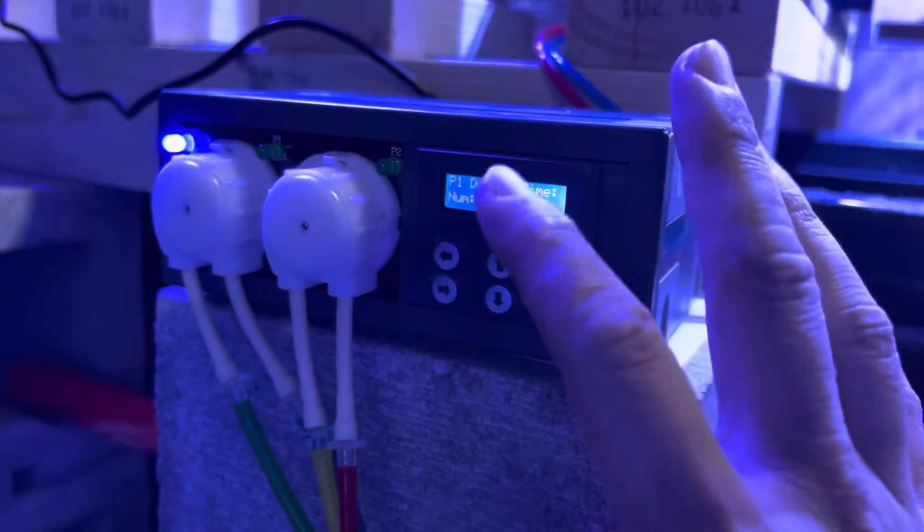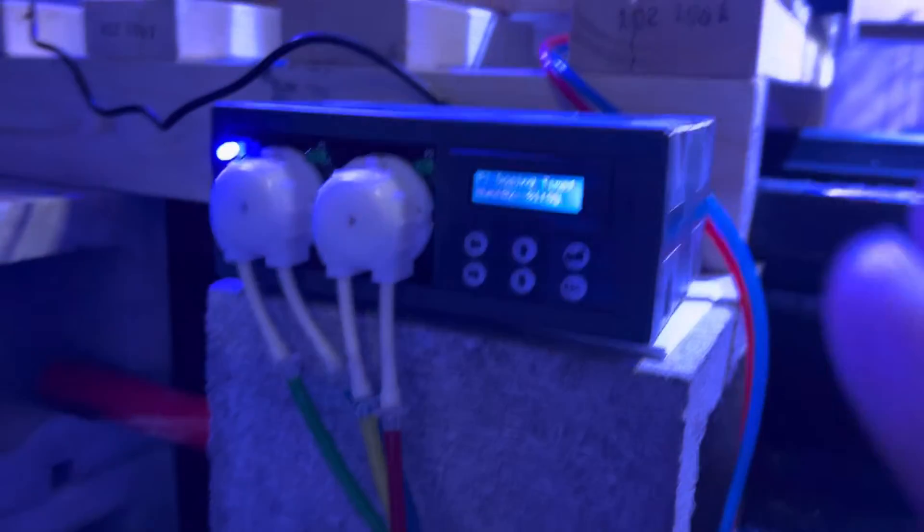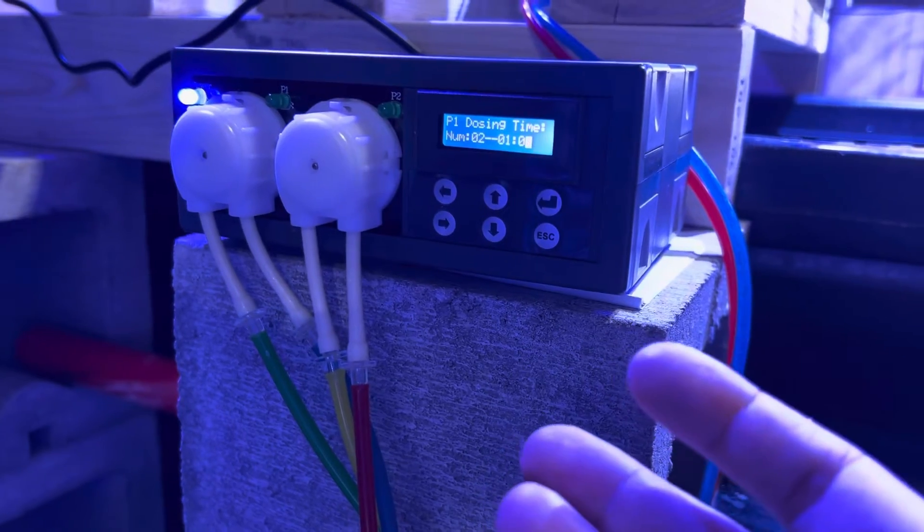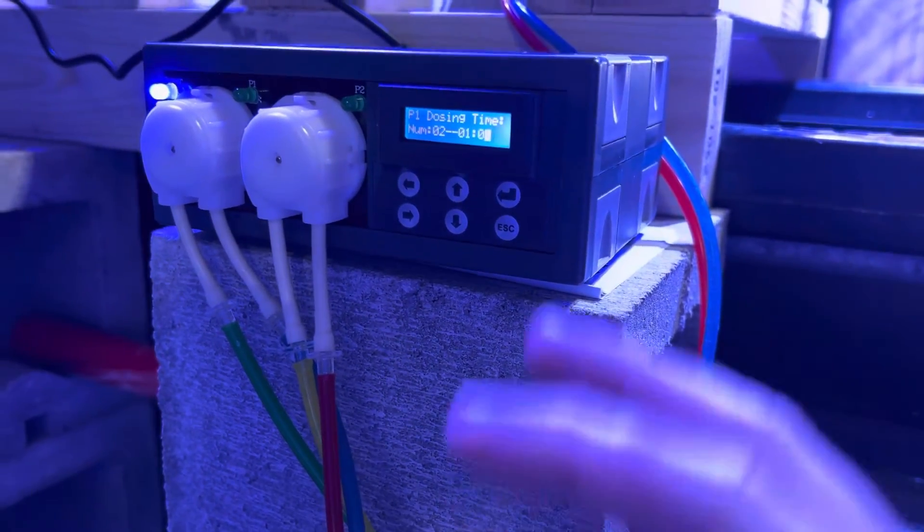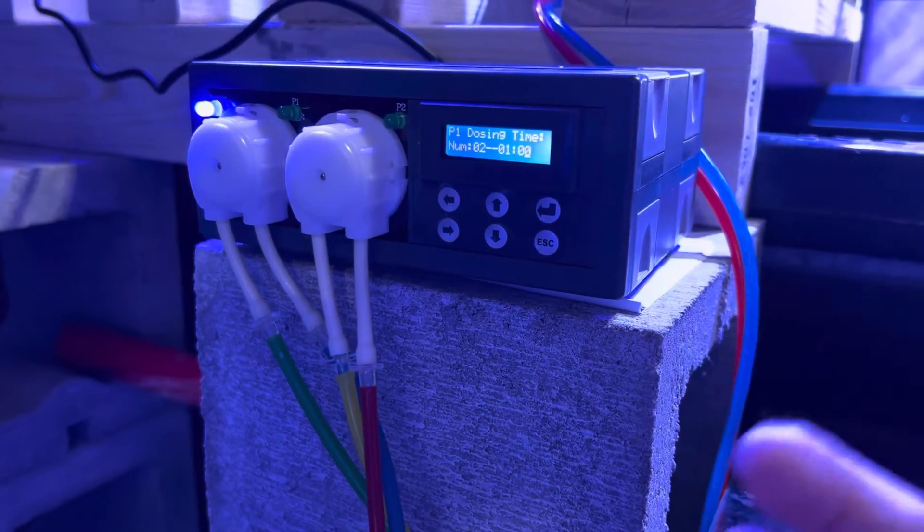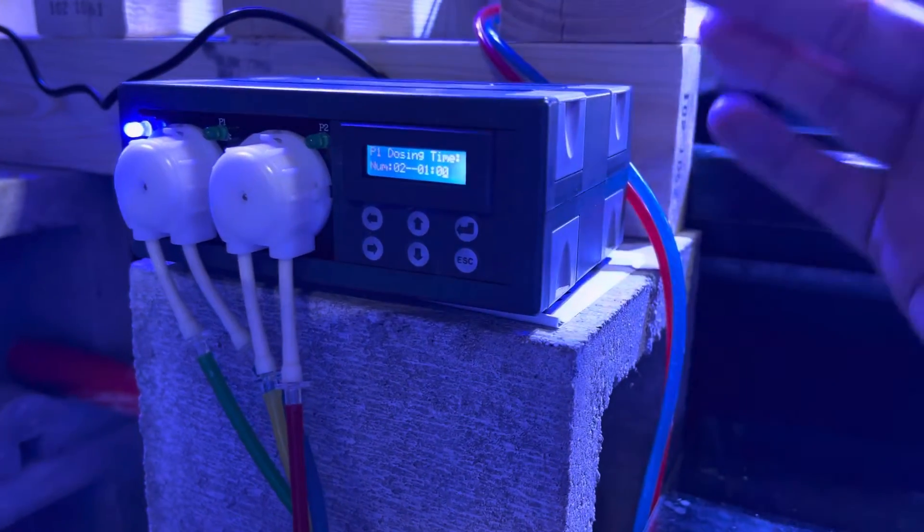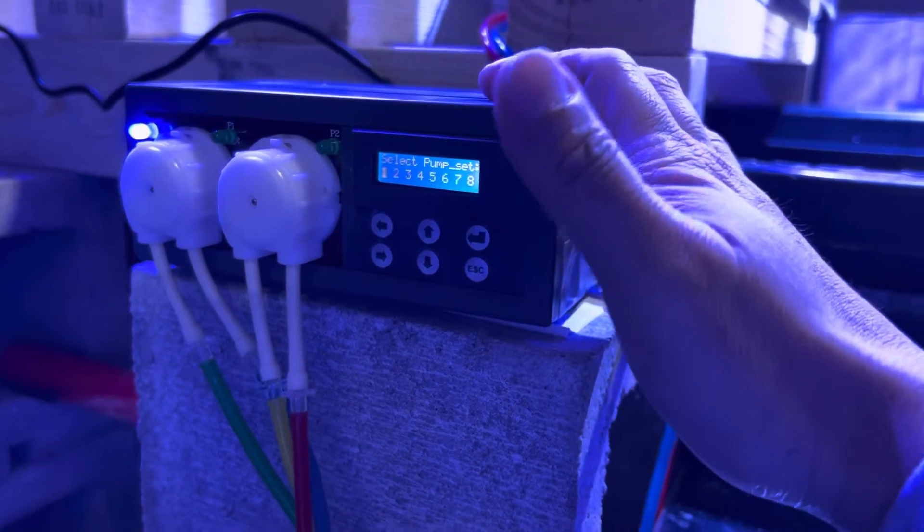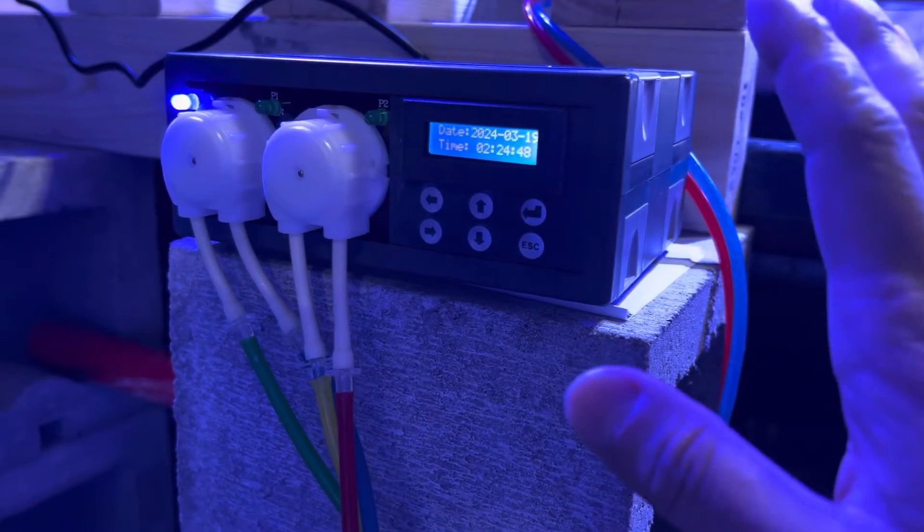Once you set it up, you can have it fluctuate. For example, if you're dosing like calcium or calc water, if you know in the nighttime it's going to dip a little bit lower, you can always have a higher volume to dose during the evenings and then dose a lower volume during the day. That's the kind of concept you can design your dosing towards. When you're happy with your setup, just click escape back to the main menu and it'll be happy just like that.